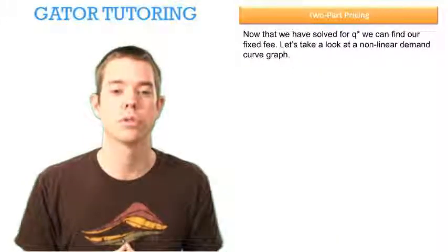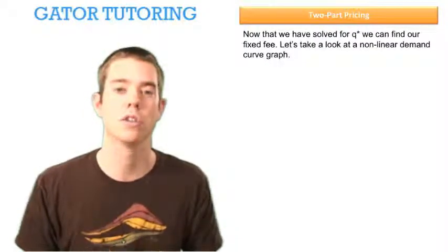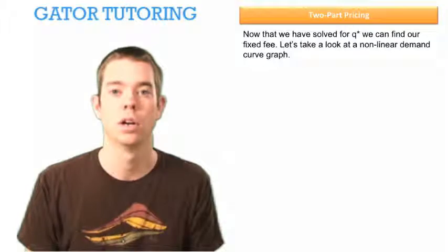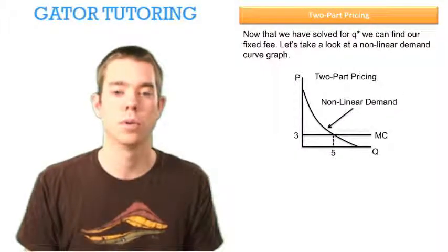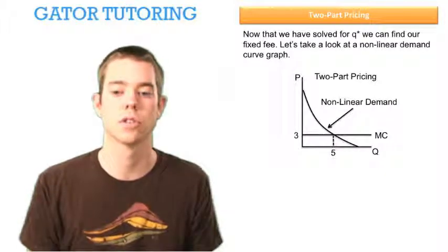So now that we've solved for Q star equal to 5, we can find our fixed fee. Let's take a look at a nonlinear demand curve graph, which is more like what we are given. So even though we're not solving for the area of a triangle, we're going to use kind of the same idea to solve this.